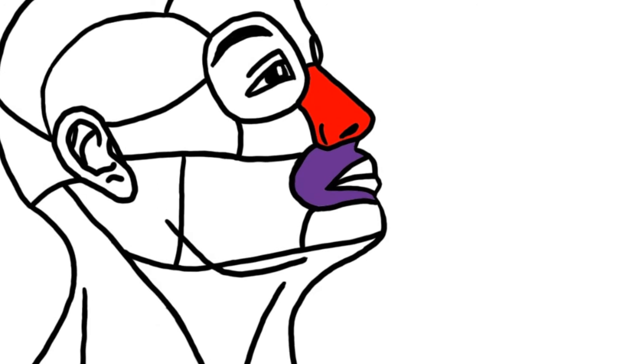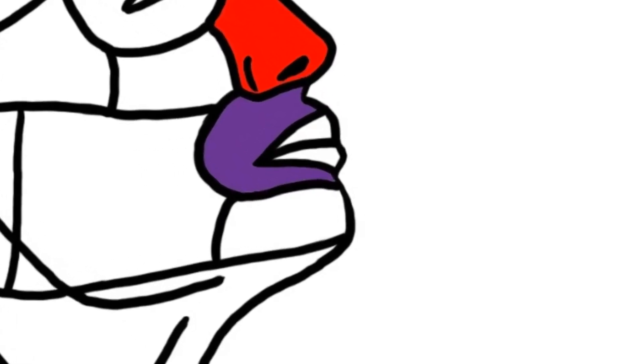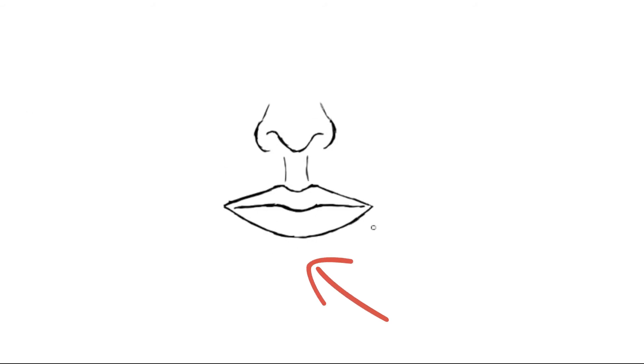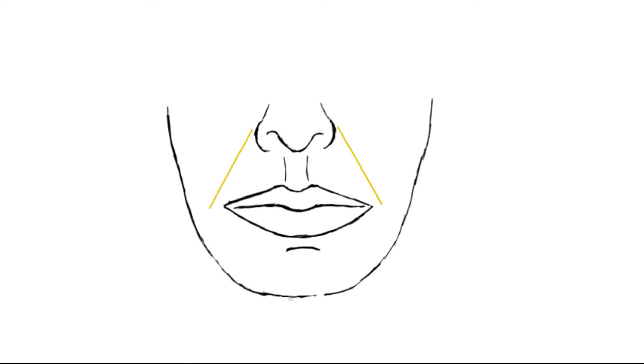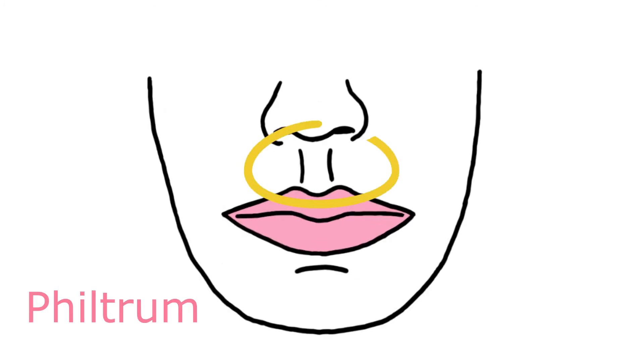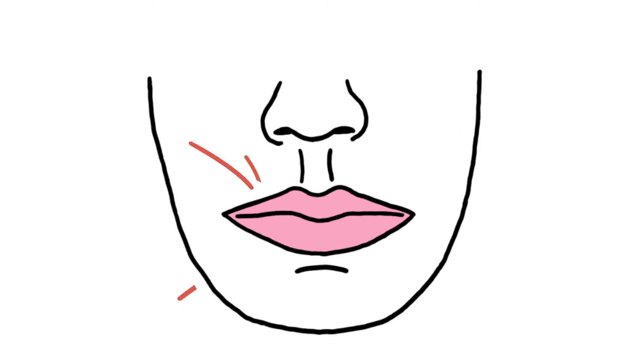Now on to the oral region of the face. For the borders: the superior is the nasal septum, the inferior is the mentolabial sulcus, and on the lateral side we've got the nasolabial crease. Let's label a few things — this is the philtrum, the upper lip and the lower lip, divided by the oral fissure.